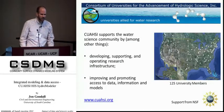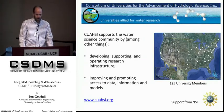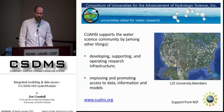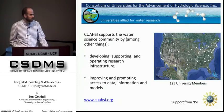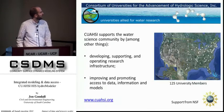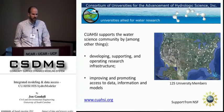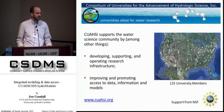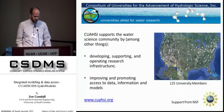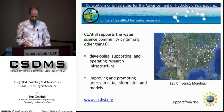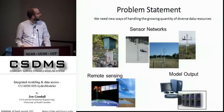You might be asking yourself what CUAHSI is. It stands for the Consortium of Universities for the Advancement of Hydrologic Science Incorporated. CUAHSI has about 125 members, and among its priorities are to develop and support operating research infrastructure and to improve and promote access to data, information, and models. Underneath that umbrella we've had this project called the CUAHSI Hydrologic Information System project.